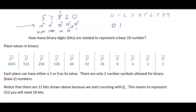Starting at the right, 2 to the zero is 1. The difference is that in base 10 that place can hold any symbol 0–9, but in base 2 each place can only hold a 0 or 1. Moving left: 2 to the 1 tells how many twos you have, 2 to the 2 tells how many groups of four, and so on — 2 squared, 2 cubed, 2 to the fourth.